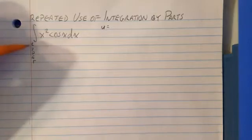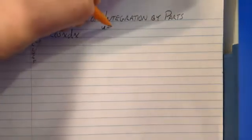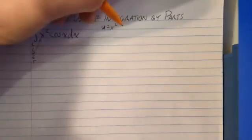So we don't have any logs, we don't have any inverse trigs, but we do have a polynomial. That's the x squared right here. So u is x squared, and then dv is going to be cosine x dx.